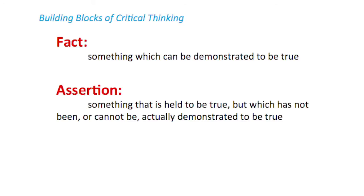An assertion is a statement that's held to be true but which is not actually a fact, because it is not, or it cannot be, proved to be true. For example, you may assert that most people in your neighborhood like pizza, but you may not be able to actually prove that unless you ask every single person. It's often quite important to understand whether something is a fact or an assertion. Assertions can be wrong, but facts by definition are true.